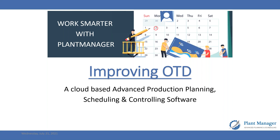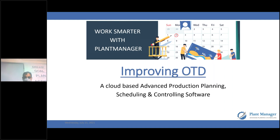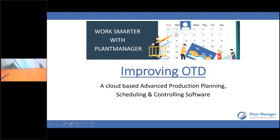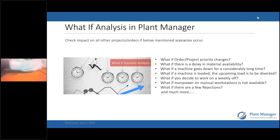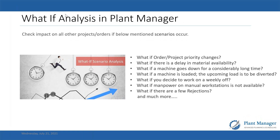The promised time comes from various parameters involved in manufacturing a particular product, based on a lot of constraints. The parameters which impact on-time delivery can be summarized on screen. You can find all of these happening every day on your shop floor: order priority changes, delays in raw material availability, machine downtime, and machine loading.